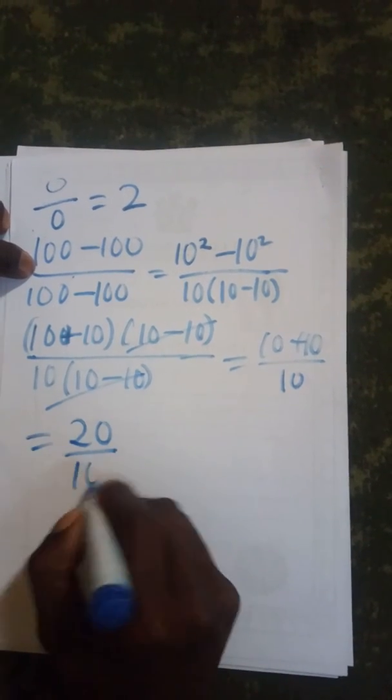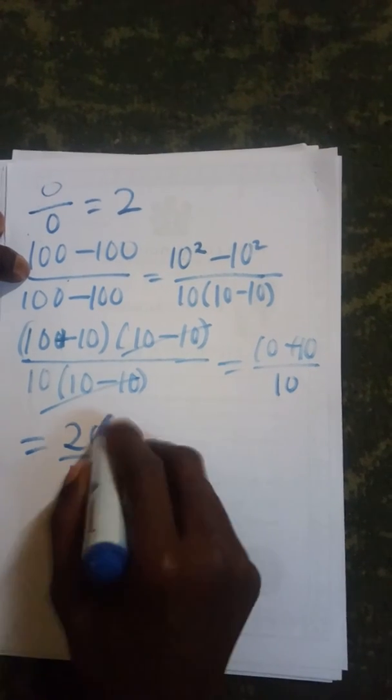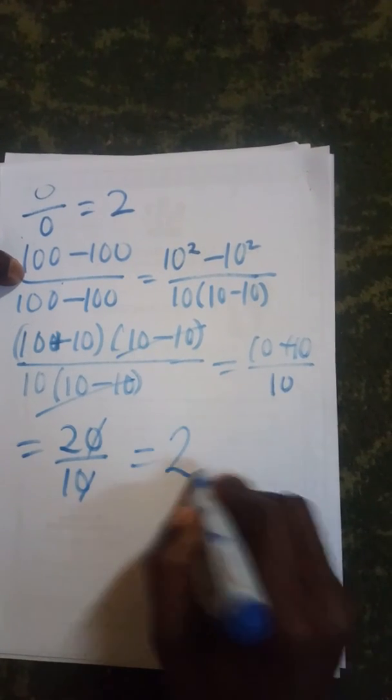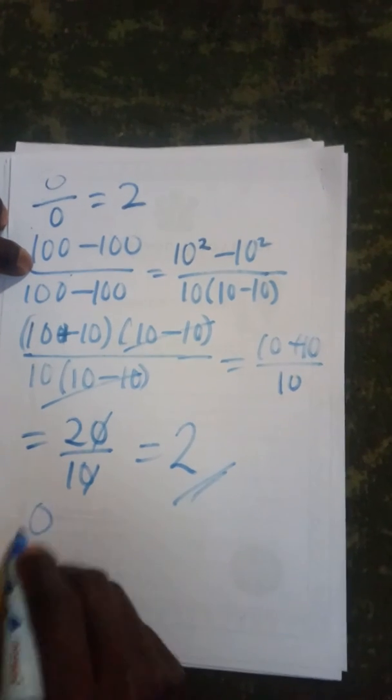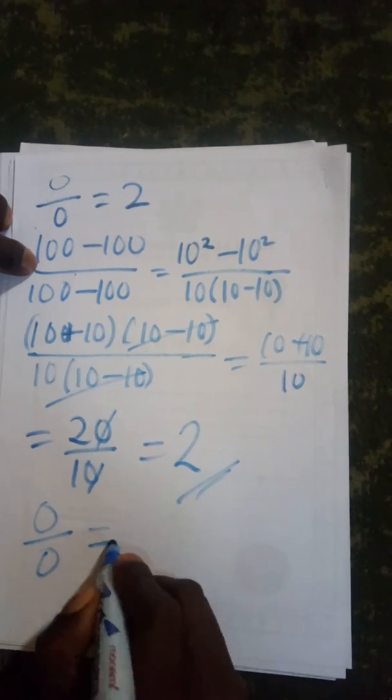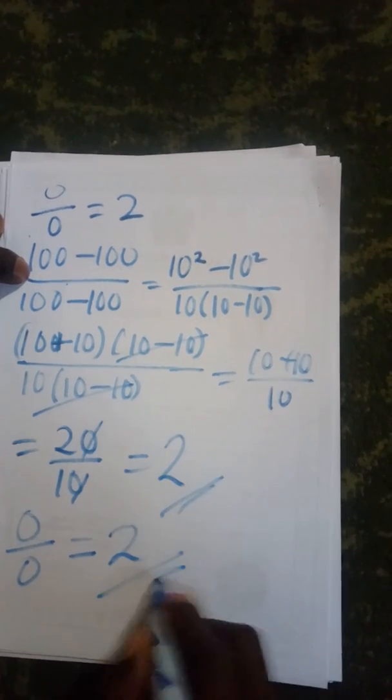over 10, which we can equally claim to be 2. That simply means that 0 divided by 0 equals 2.